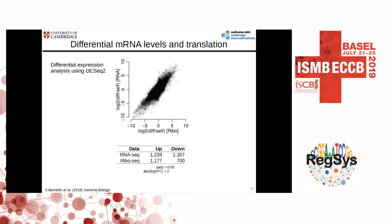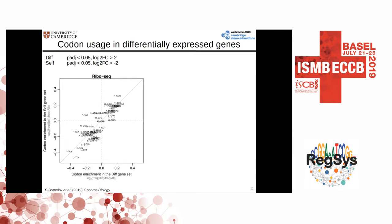After inducing differentiation, the cells undergo massive changes in gene expression. This is just to give you an overview of the expression changes and how similar they are between the ribosome profiling and the RNA-seq. Using rather stringent criteria, we identified around 2,000 genes that are differentially expressed in each of these two datasets. For simplicity, the genes that were higher in the differentiating state are called the diff gene group, and those that were higher in the self-renewing state are called the self group.